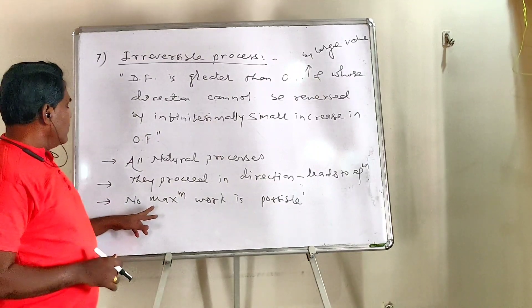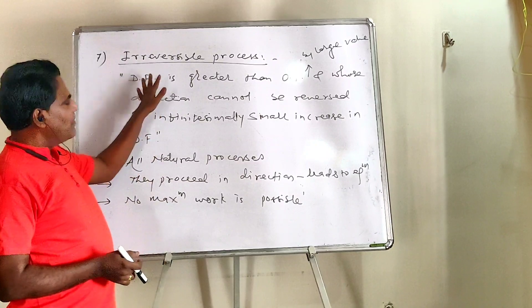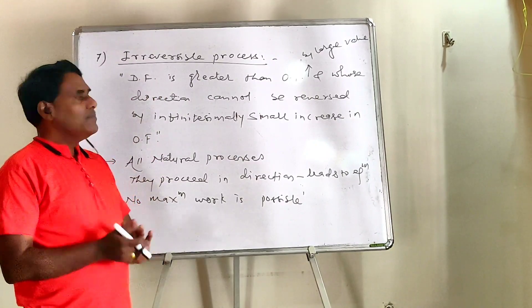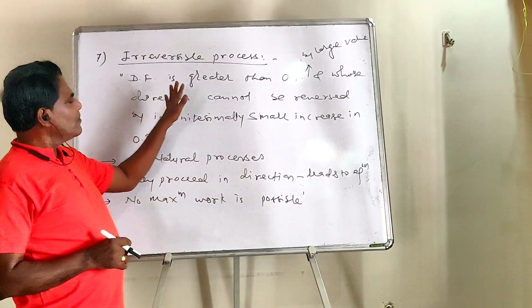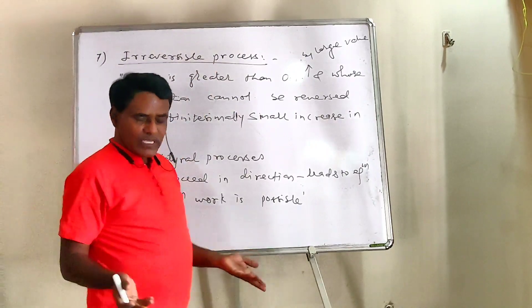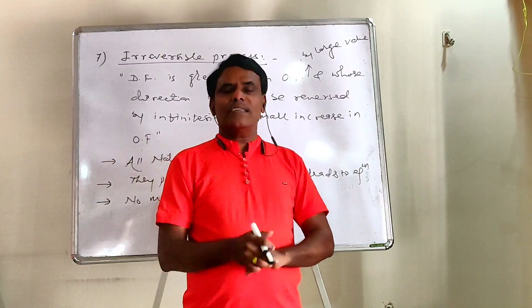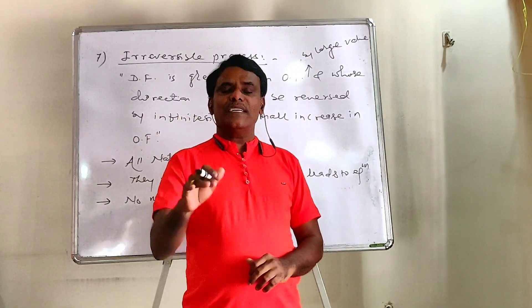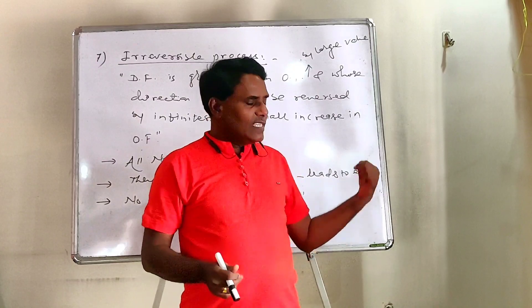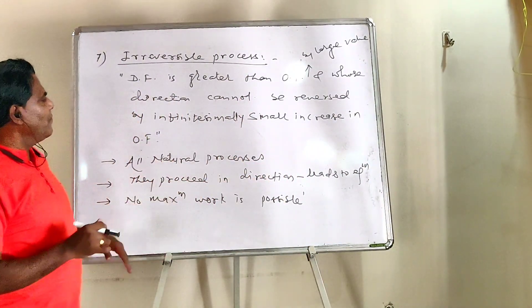And in this process, maximum work is not possible. Because here driving force is very large compared to opposing force. If opposing force is more, work to be done is more. But if opposing force is less, there is no need for the system to do much work. The same stone or iron sphere, if I have to push it from top of the hill to bottom, the force I have to apply will be much less.